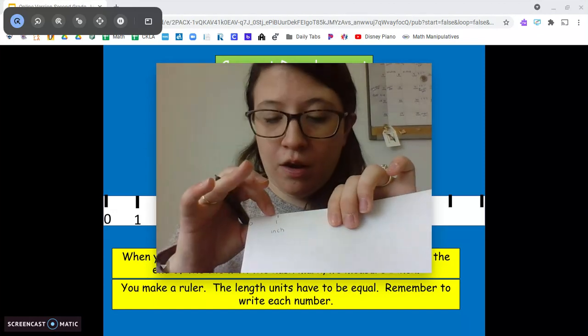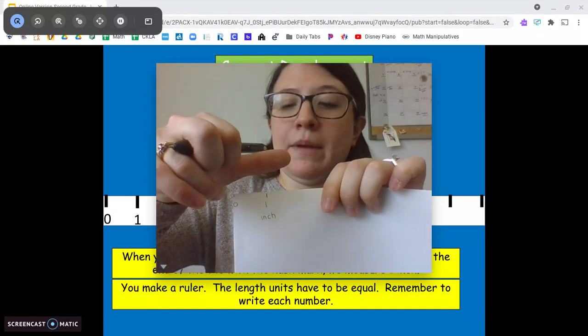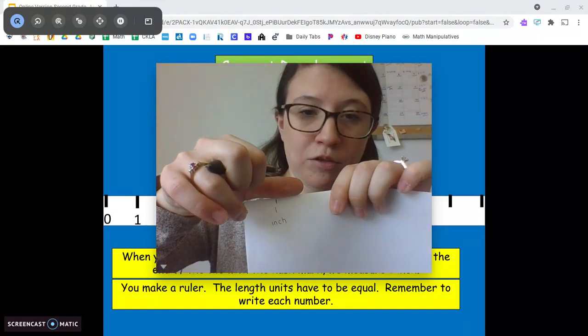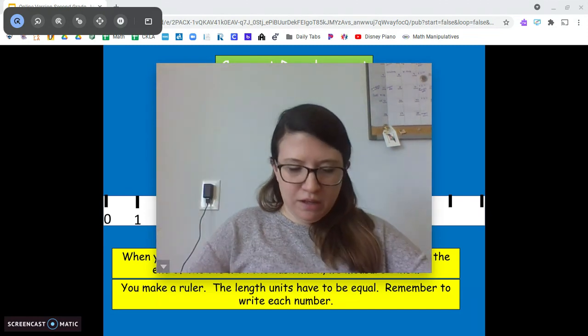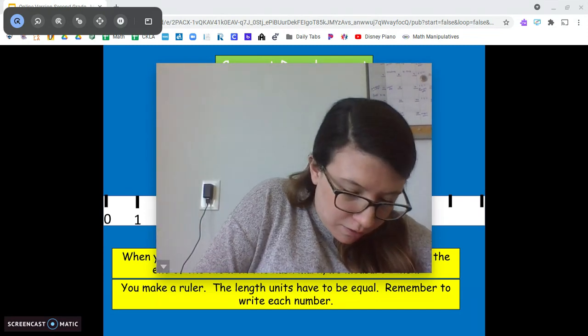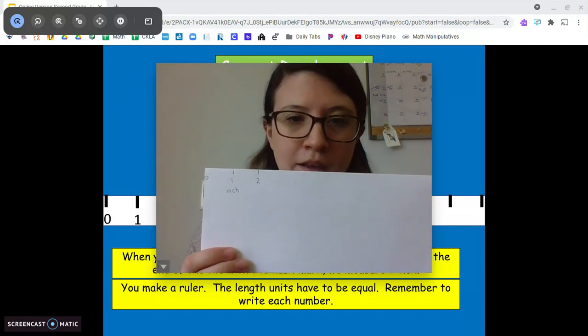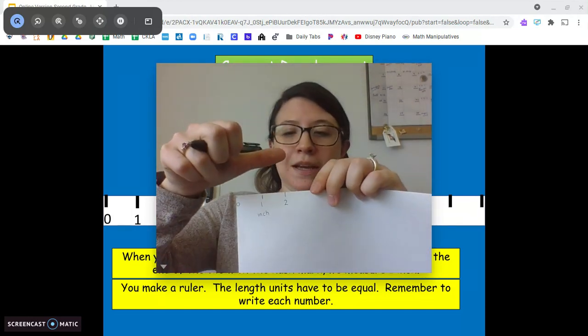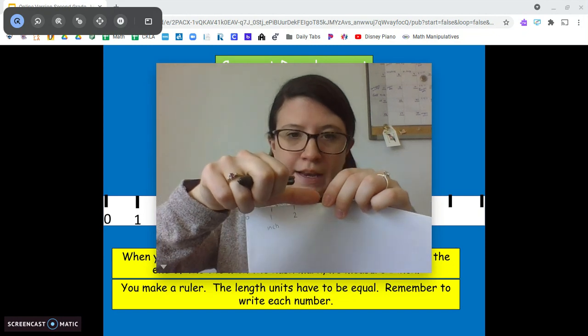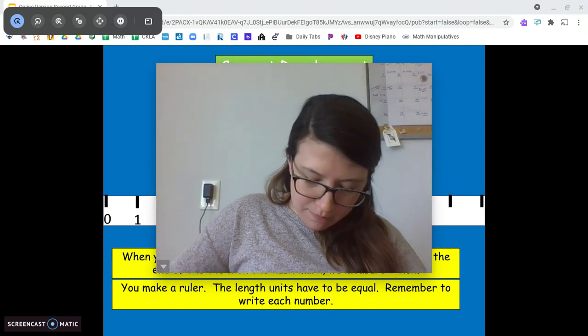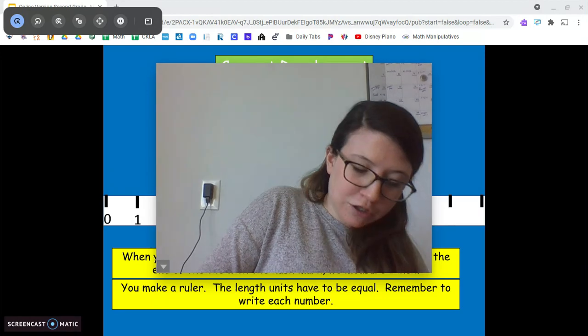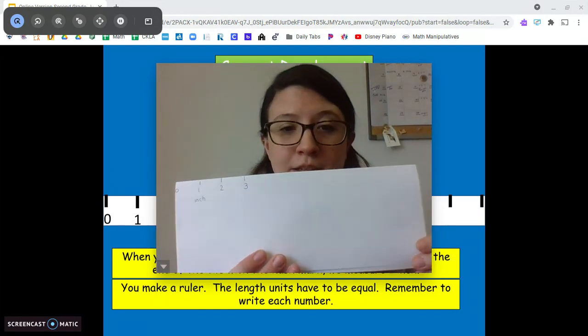Now, starting from this mark, I'm going to line up my knuckle with my thumb. I'm going to make another mark and I'm going to write a two. Okay. And I'm going to keep going, taking my knuckle, lining it up with my thumb and I'm going to make a three, making sure I have equal measurements.